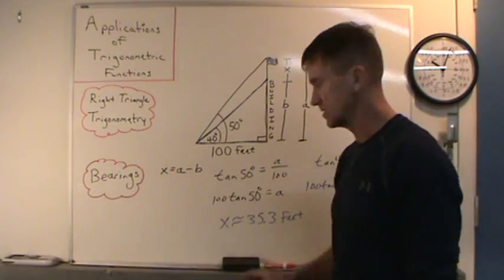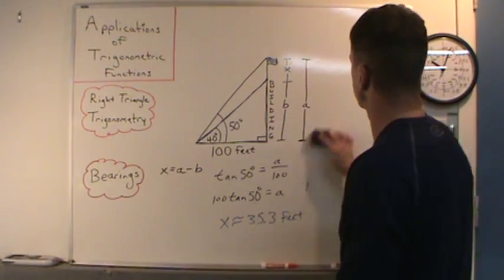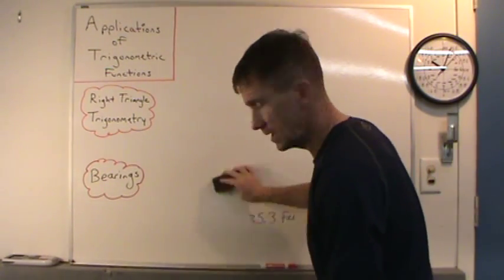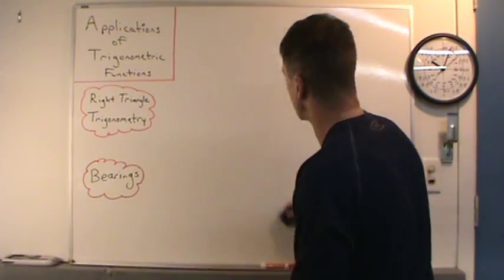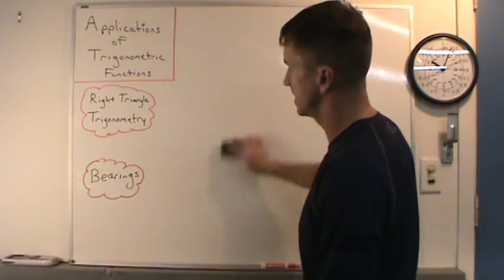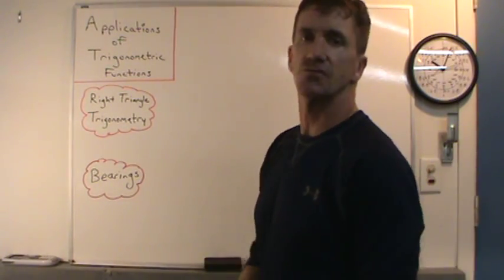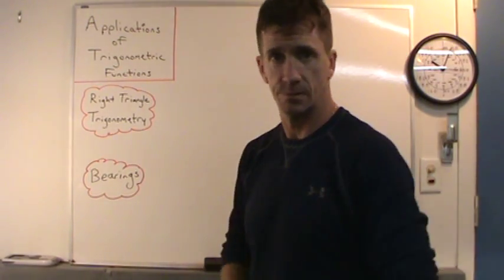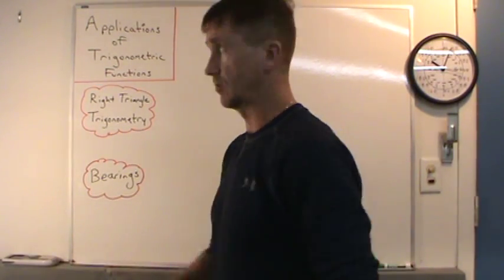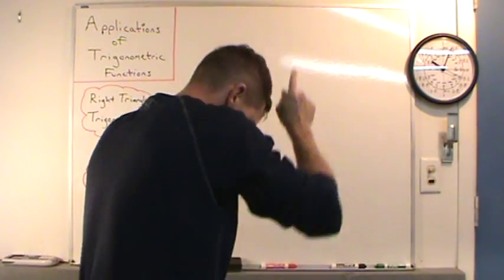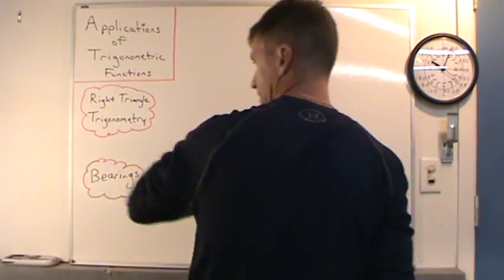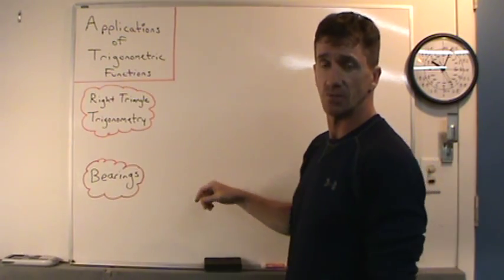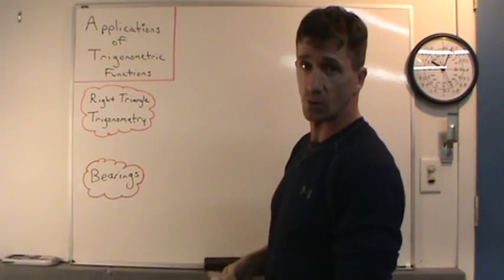Let's talk about bearings. A bearing is an angle — an acute angle, which means it's less than 90 degrees. It's measured from due north or from due south. You've got north, south, east, and west. A bearing is an acute angle measured from due north or due south.